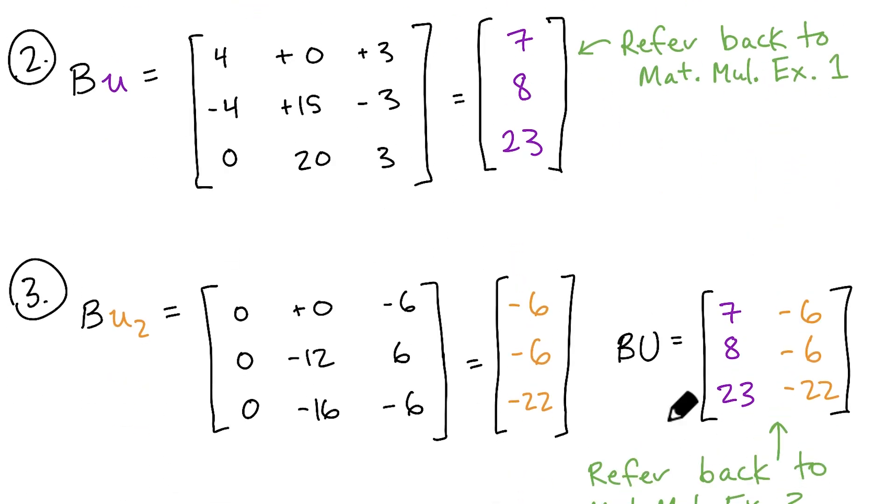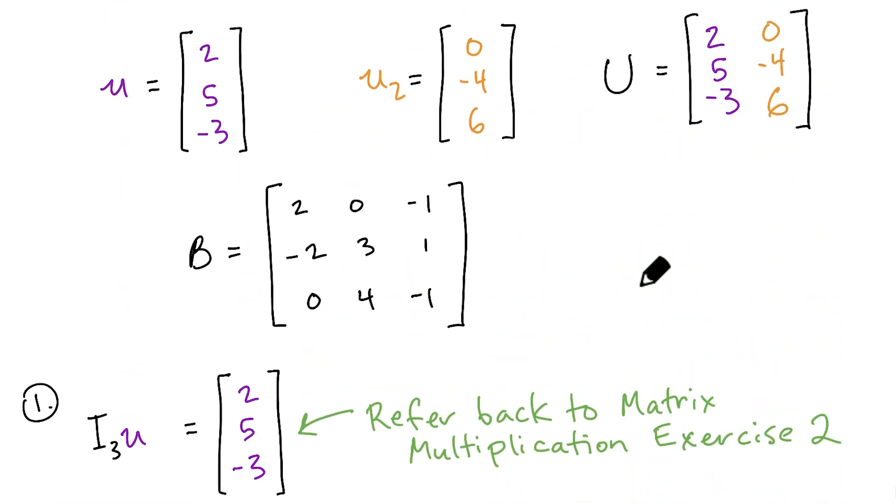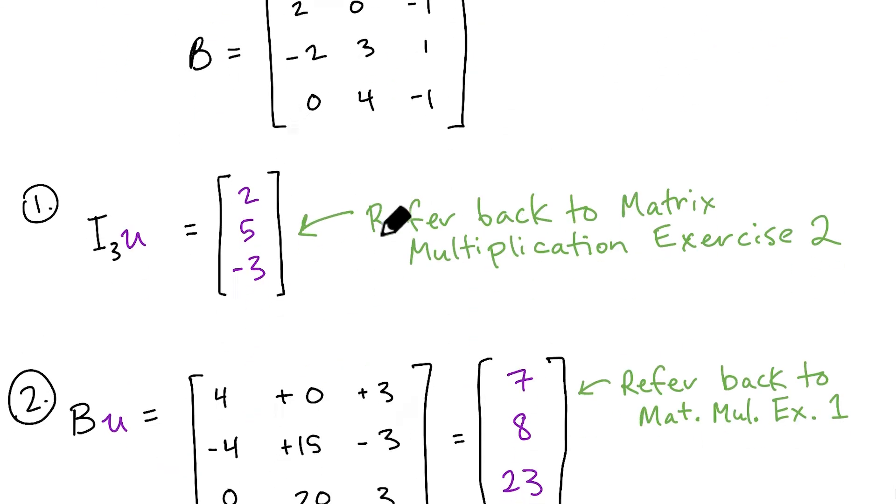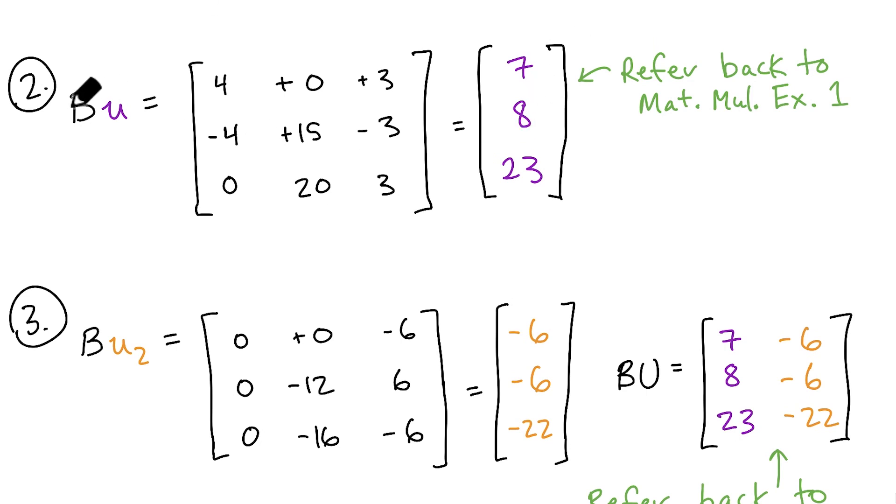So you can either go ahead and apply B to U or you could have come to this answer more quickly by using the results from applying B to the vector U and concatenating those with the results of applying B to U2 separately.